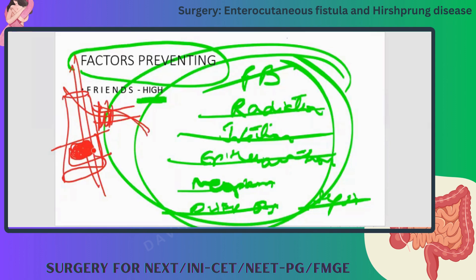E is epithelialization. If the fistula gets epithelialized, that means it has become mature — then it is very difficult to heal. An immature fistula has no epithelium, just a tube, so it is easier to treat.